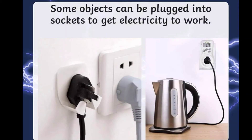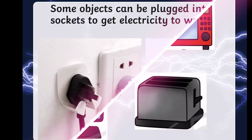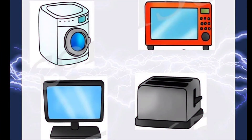Some objects can be plugged into sockets to get electricity to work, like a washing machine, an oven, a television, and a toaster.